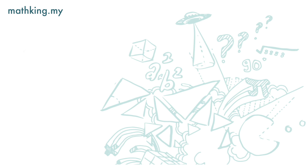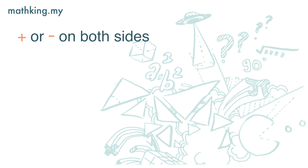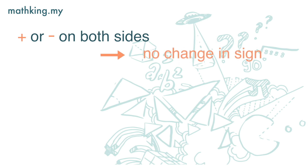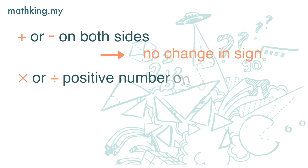As a summary: if we add or subtract positive or negative numbers on both the left-hand side and the right-hand side, the greater than or less than sign stays unchanged. If we multiply or divide both sides by a positive number, the greater than or less than sign also remains unchanged.